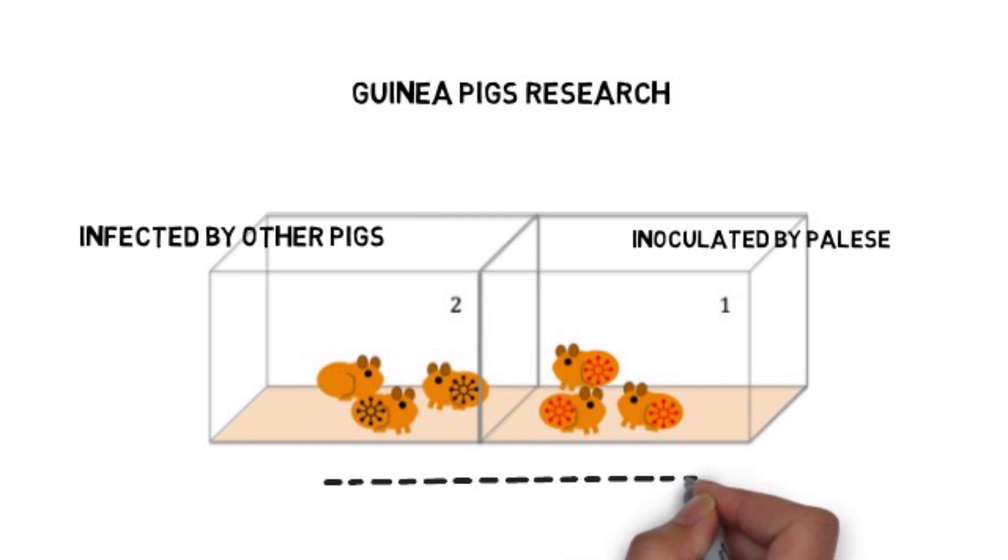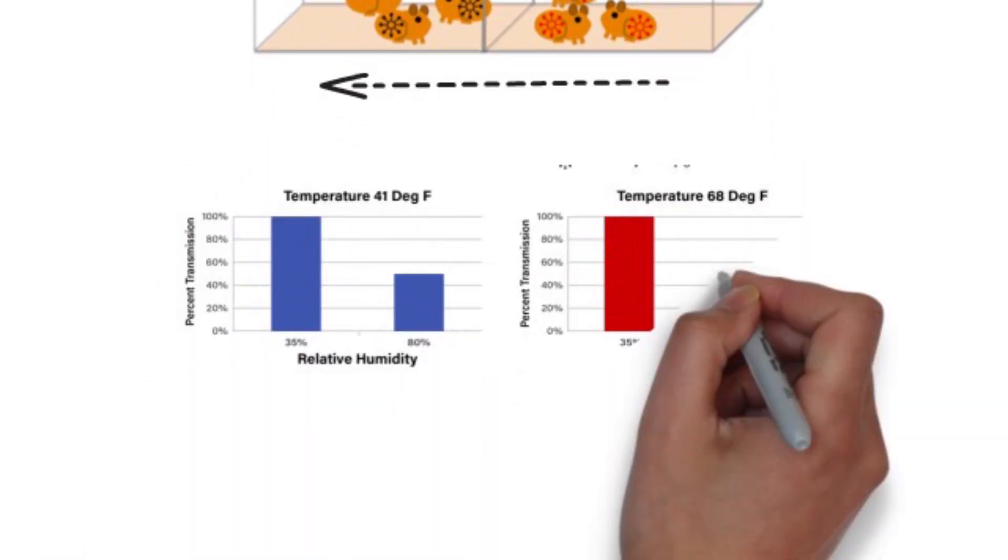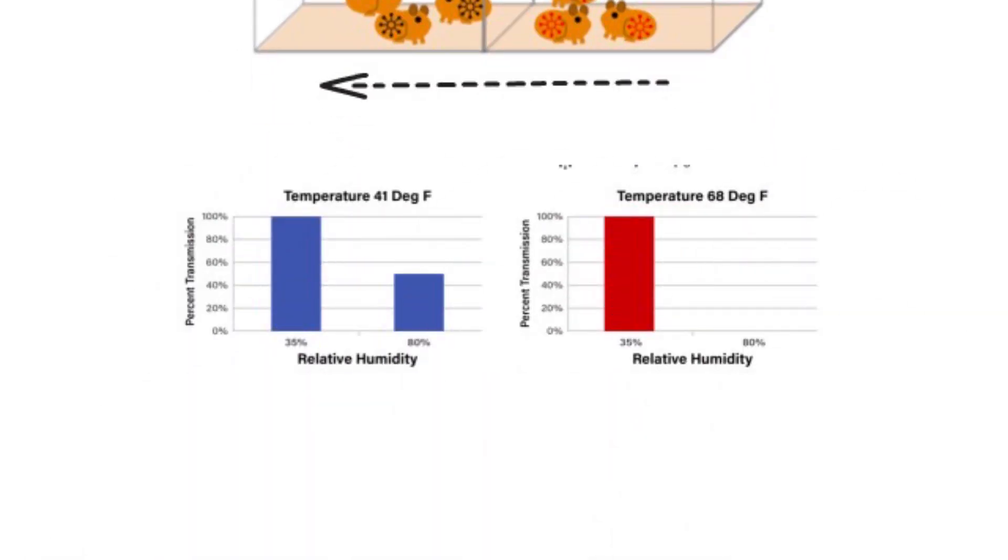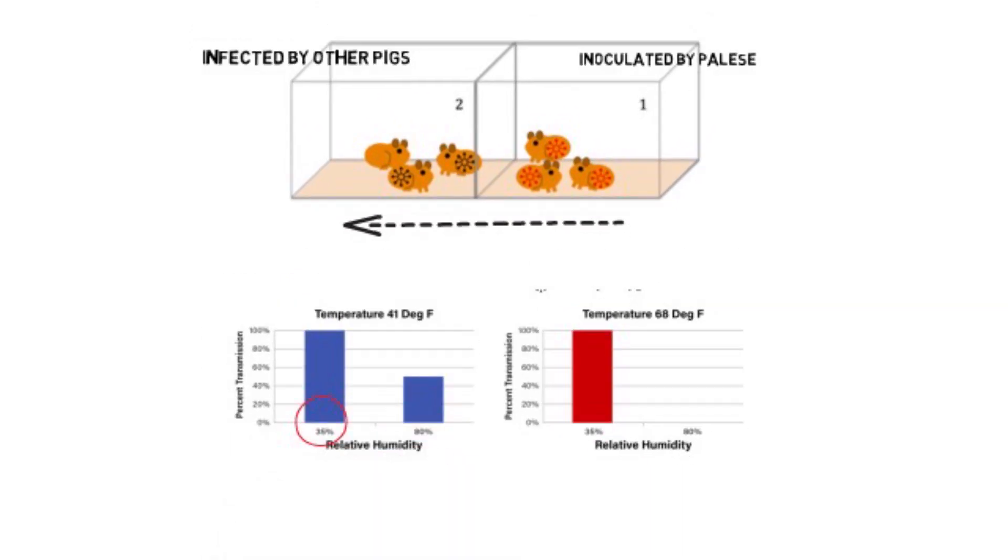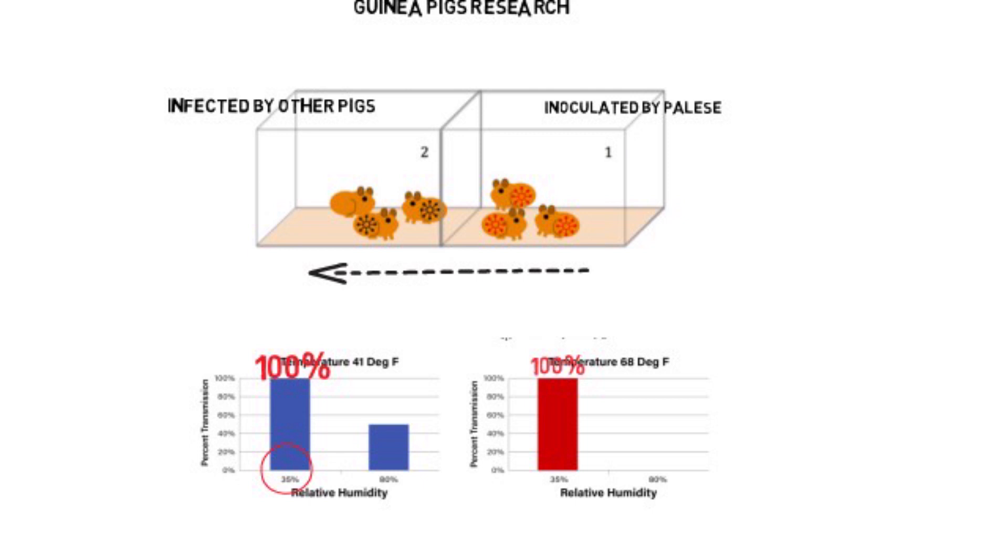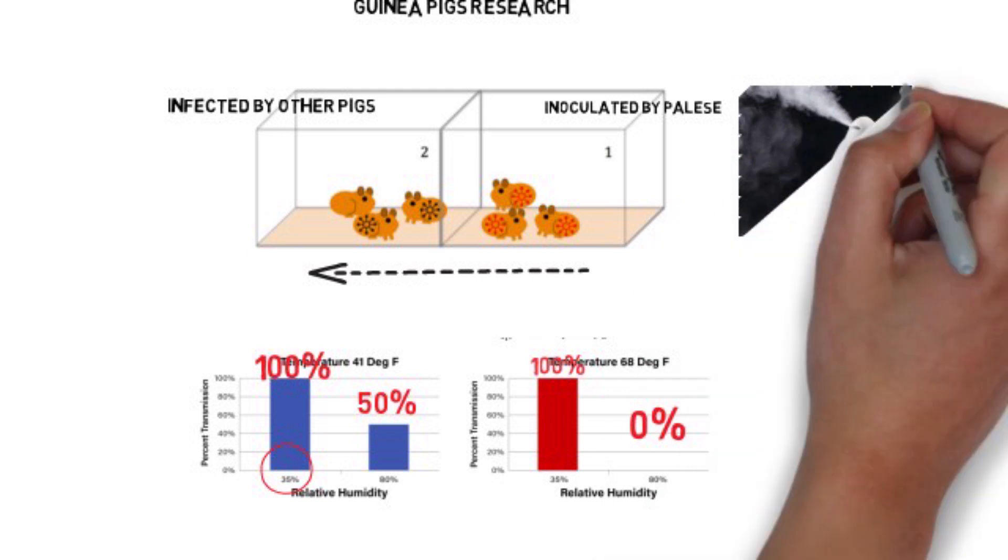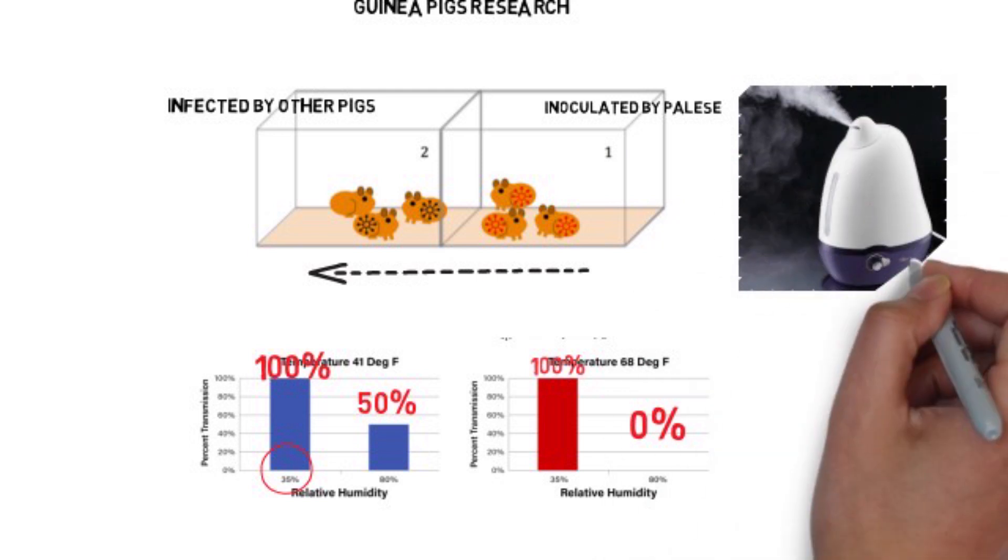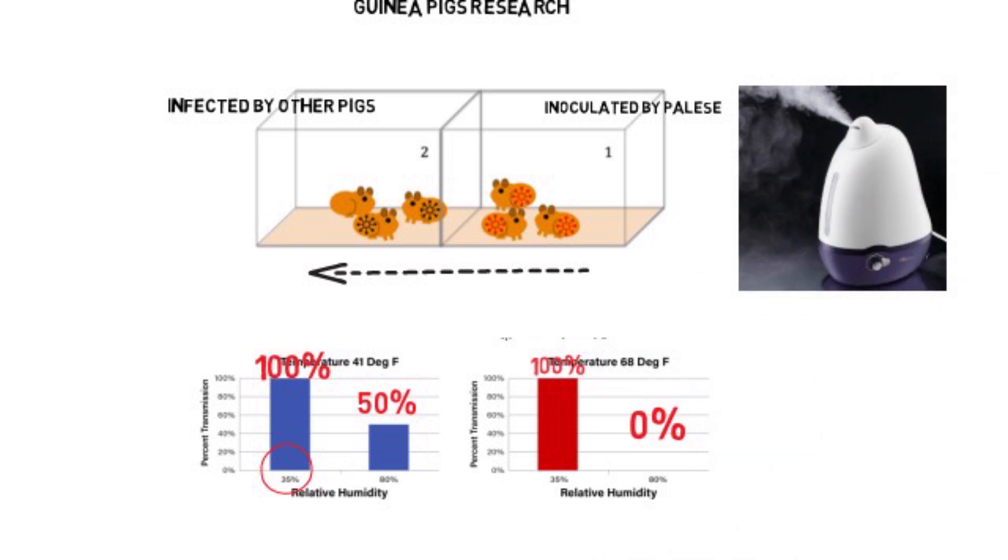Research shows the transmission rates for the infected guinea pigs are different at various air temperatures and relative humidities. At a low relative humidity of 35 percent, the transmission rates are 100 percent at both 41 and 68 degrees Fahrenheit. At a high relative humidity of 80 percent, however, the transmission rates are much different. 50 percent at 41 degrees Fahrenheit and 0 percent at 68 degrees Fahrenheit. So during the winter season, in a cold climate, it is vital to increase the air relative humidity. You may need a humidifier.